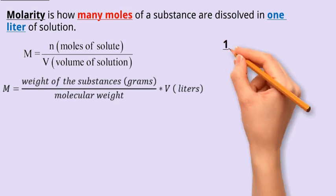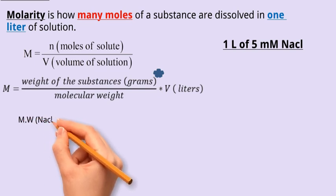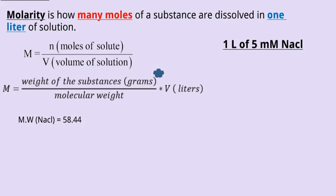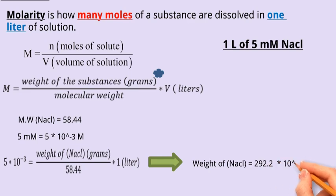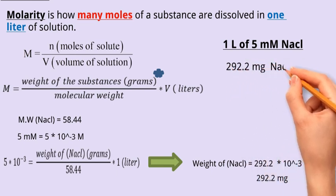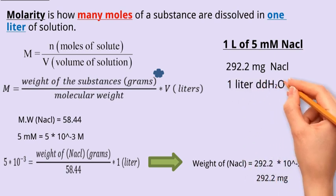Coming back to our example, if we want to prepare one liter of 5 millimoles of sodium chloride. In this case, we need to calculate the mass or weight of the required sodium chloride because we know that the molecular weight of sodium chloride is equal to 58.44. Also, we convert 5 millimoles to moles, which is 5 by 10 to the power of 10 minus 3. So it is equal to 292.2 raised to the power of 10 minus 3 grams, which is equal to 292.2 milligrams. So weigh 292.2 milligrams of sodium chloride and dissolve it in one liter of water to get 5 millimoles of sodium chloride.